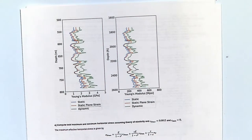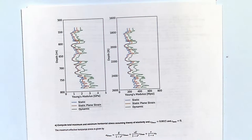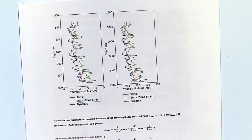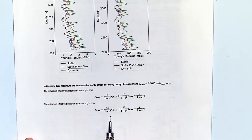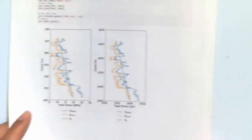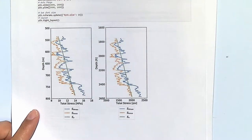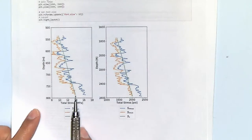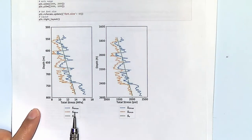After this, you calculate the static plane-strain modulus, which is a little bit higher than the Young's modulus. Then you use the equations we discussed before — adding the tectonic strain component allows you to calculate layer by layer what the stress is. You get something that looks like this: vertical stress, minimum horizontal stress, and maximum horizontal stress.